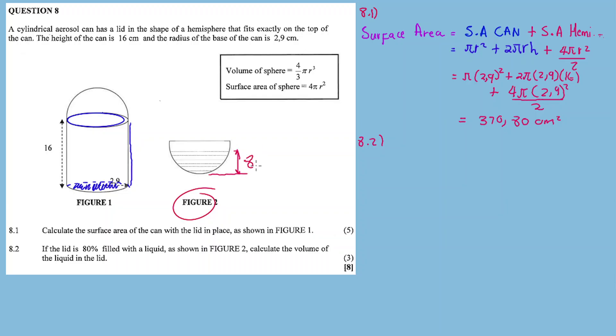So the liquid fills up all the way to this level, which is 80% or represents 80% of the total volume of the lid. What do we calculate?